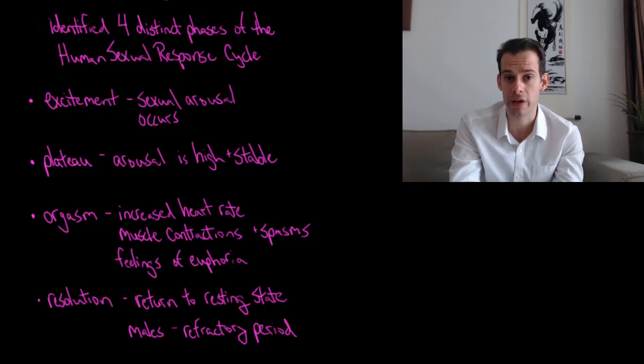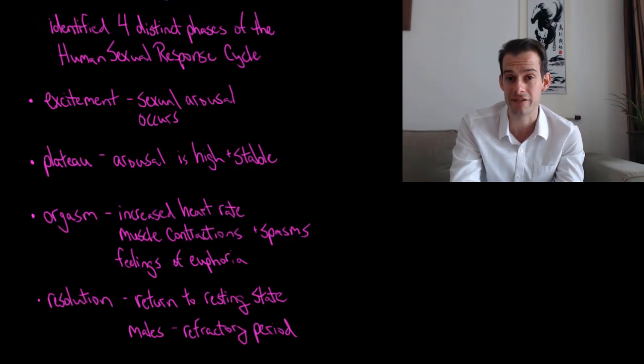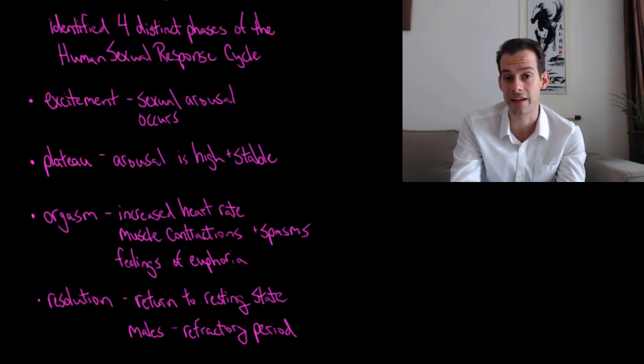It's worth noting that this process involves activity of the parasympathetic nervous system, which means you have to be somewhat relaxed for this to occur properly. This is why we see some types of sexual dysfunction associated with high levels of stress. If you're very stressed and don't have enough parasympathetic activity, you might have problems like impotence in males or insufficient lubrication in females.